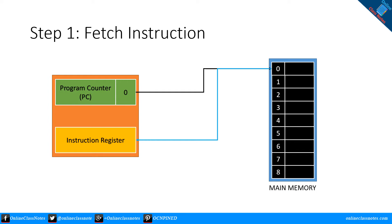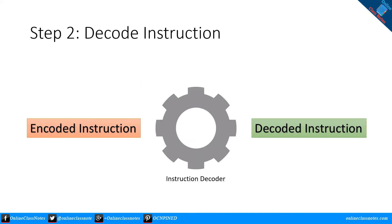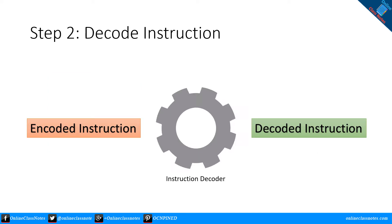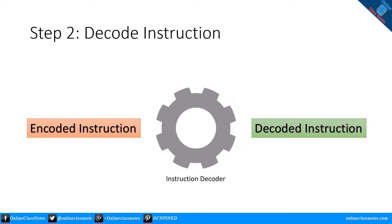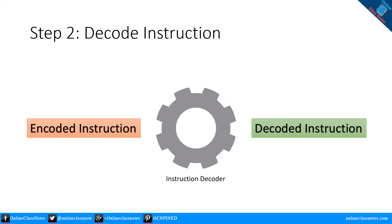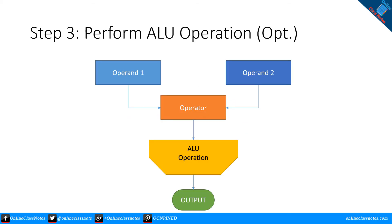Step 2: Decode instruction. During this step, the encoded instruction present in the IR (instruction register) is interpreted by the decoder to form a decoded version of the instruction.